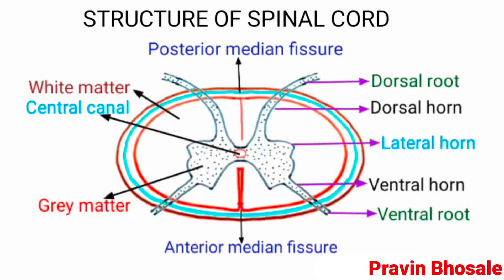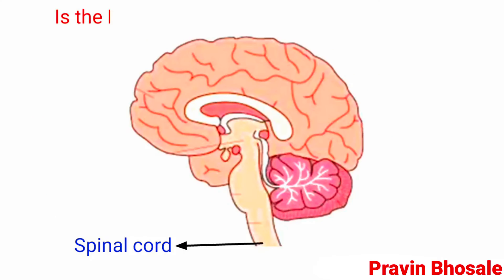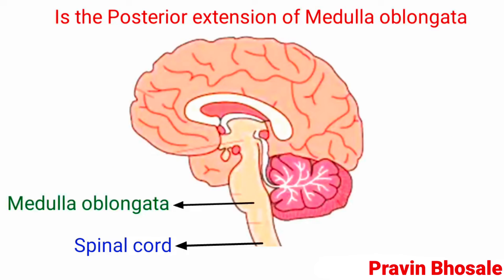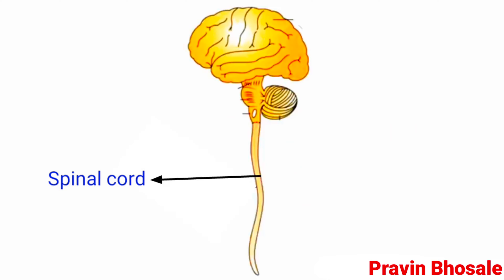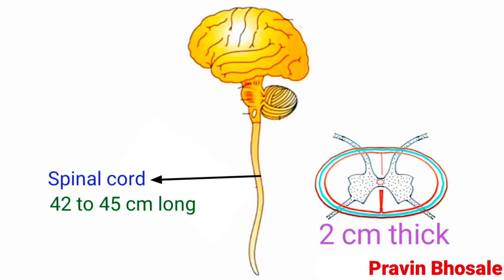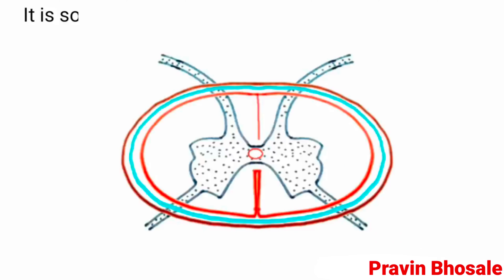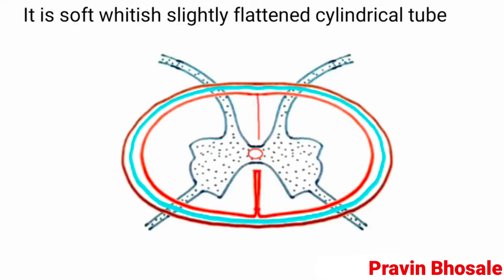Today let's revise the structure of the spinal cord. The spinal cord is the posterior extension of the medulla oblongata. It is enclosed in the neural canal of the vertebral column. In adult human beings, it is 40 to 45 cm long and 2 cm thick. It is a soft, whitish, slightly flattened cylindrical tube with a narrow cavity called the central canal.